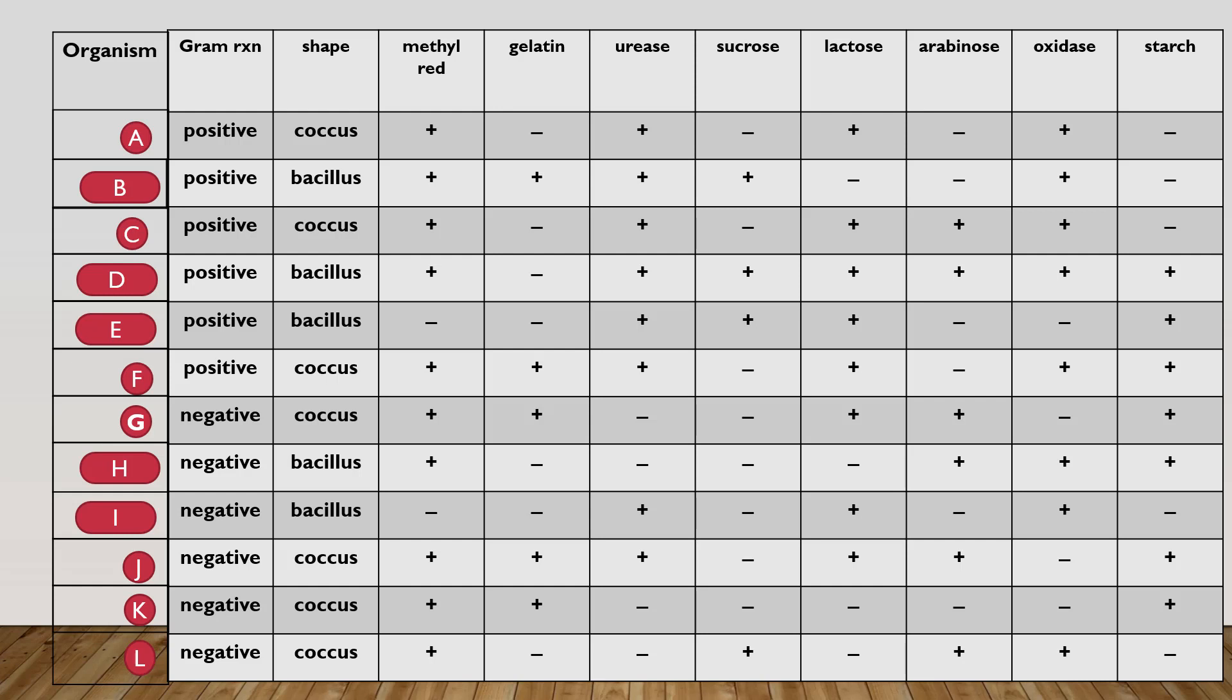Now a plus is a positive result. In this case, it's very similar to a yes answer in the previous exercise. A minus represents a negative result, and it's the same as no for an answer. Now for this purpose, you don't actually need to know what a plus positive or a minus negative means in order to set up your key. But at one point, in order for you to solve your unknown organism, you should know what the test reaction is actually measuring.